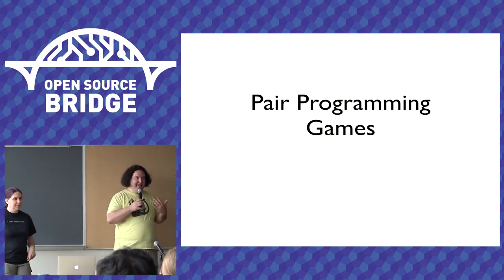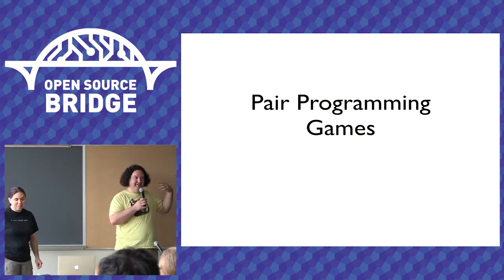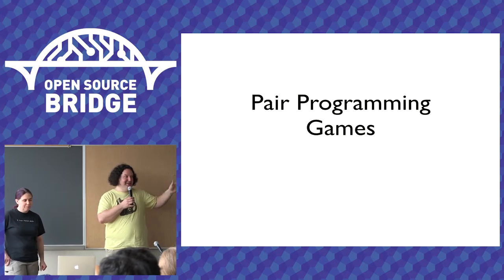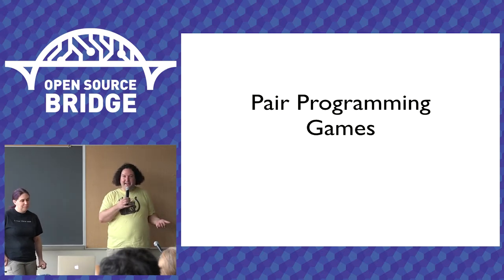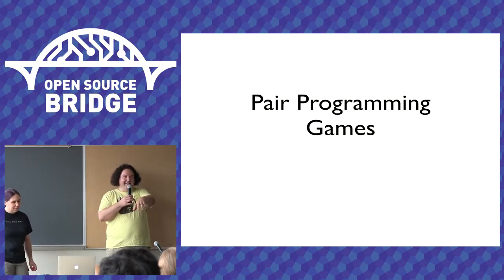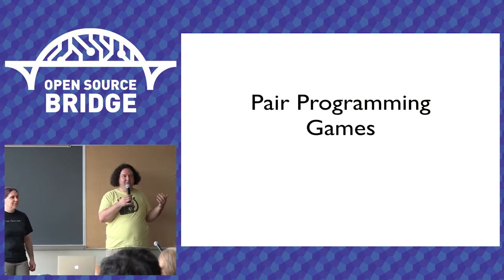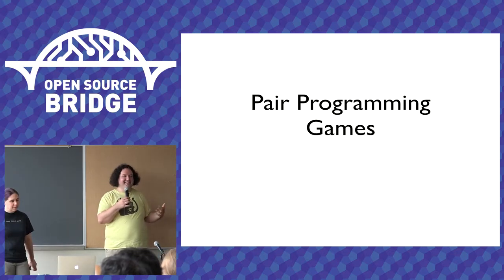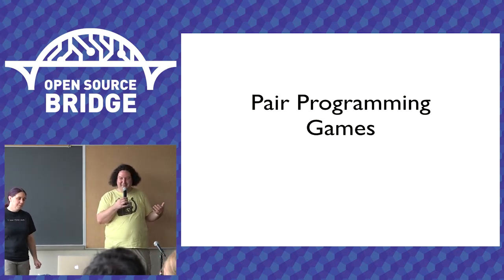A bunch of us had this pattern of doing little coding exercises to work on design skills, TDD, and thinking about clean object-oriented code. We started thinking about whether there were things like that we could do with pairing, and ended up coming up with a few little games where we'd pair for a while in a very constrained format and concentrate on one aspect of what pairing looked like when it was going well. We had a conversation very much like the one at the beginning of this workshop — thinking through what we recognized in good pairing and trying to make ourselves do more of it.